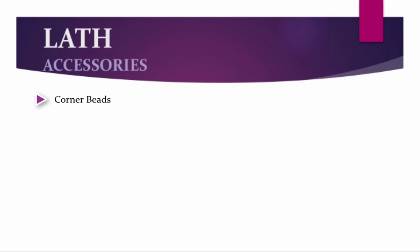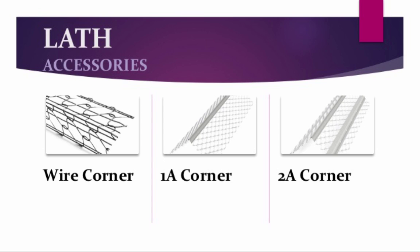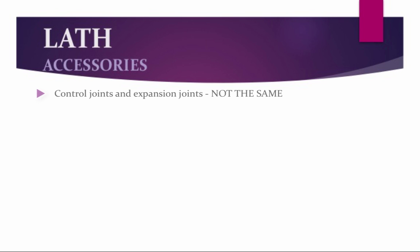Corner beads are a vital part of any stucco assembly. They provide grounds for straight outside corners and are available in many different styles. Wire corners are available in short flange, arch, bullnose, or a combination. The photo on the left shows a wire corner — the most versatile corner available for stucco assemblies, as it can be arched, bullnose, or both. The photo in the center is a 1A corner — a very rigid corner. The photo on the right is a 2A corner, almost identical to the 1A corner but with a reinforced nailing flange.